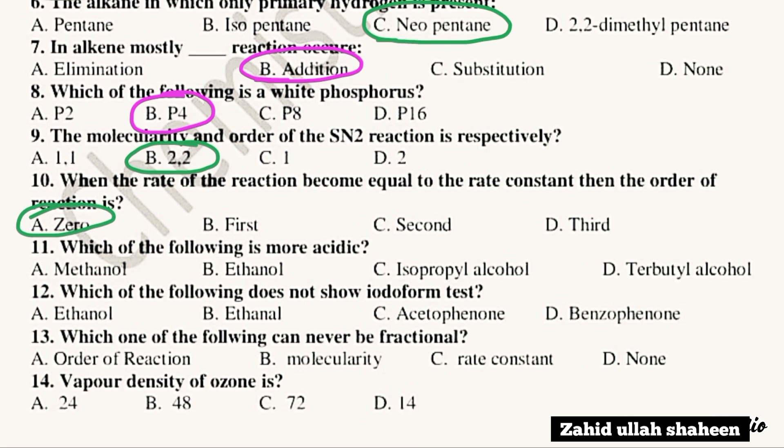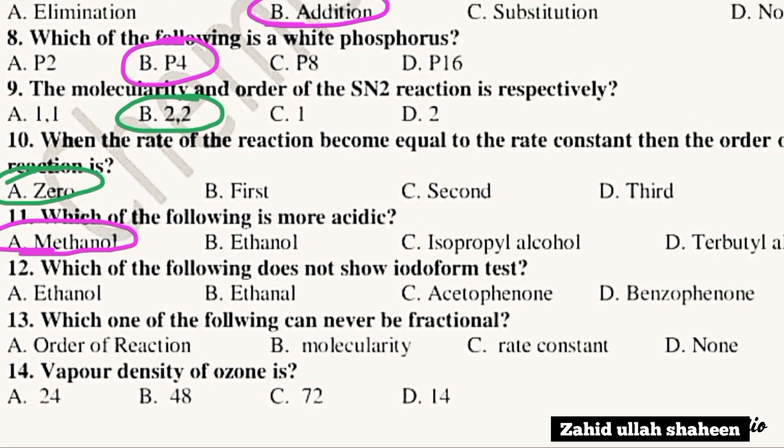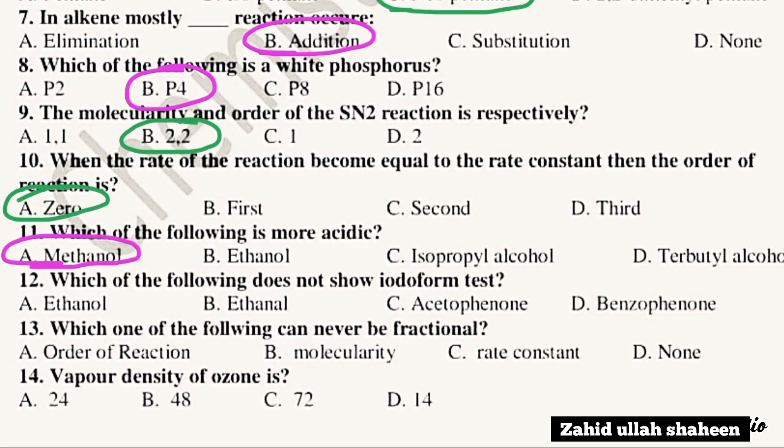Question 9: Which of the following is more acidic? The answer is the more acidic compound — take option.